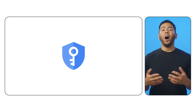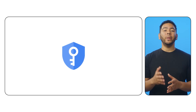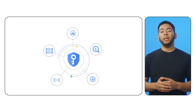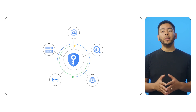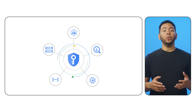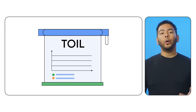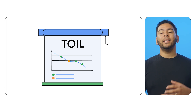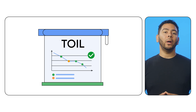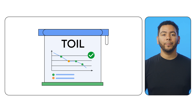Luckily, Google Cloud has simplified this process with Cloud KMS AutoKey. Cloud KMS AutoKey automates the provisioning and assignment of your keys when encrypting your Google Cloud resources with encryption keys you create and control. Better yet, it incorporates recommended practices that can significantly reduce the toil associated with managing your own encryption keys. This can help you complete your projects faster.